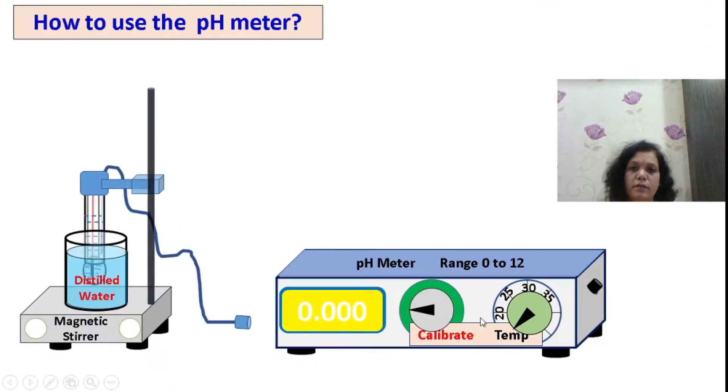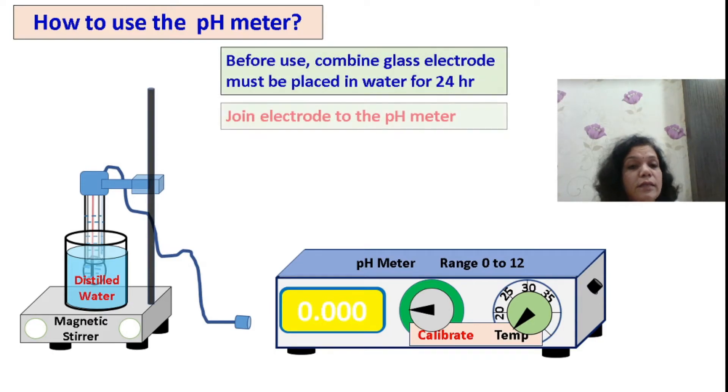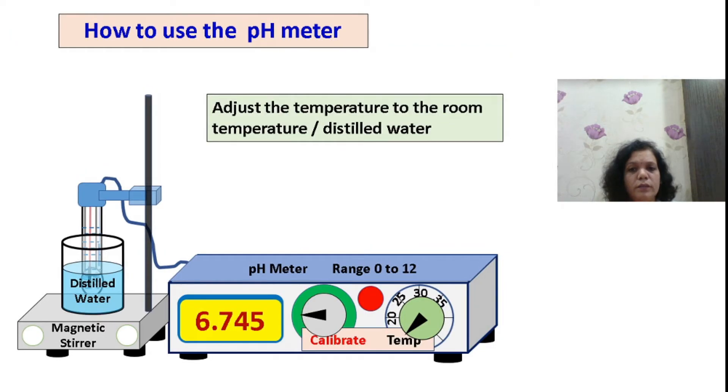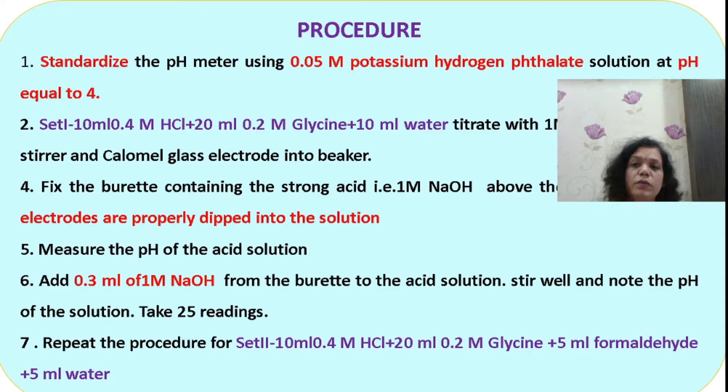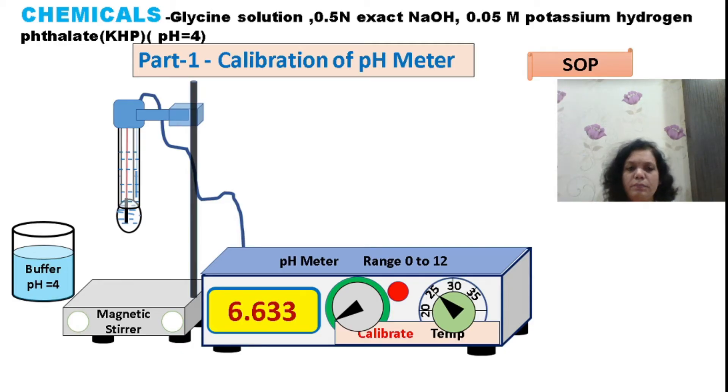How to use the pH meter: Always keep the glass electrode in contact with water to remain active. Make sure your glass electrode is dipped in water 24 hours before use so the glass becomes active for ionic exchange reactions at the glass surface. Join the pH meter, power it on, and check the temperature knob to ensure it represents room temperature. You have to use buffer solutions - either ready-made buffers at pH 7, 4, and 9, or 0.05M potassium hydrogen phthalate solution.